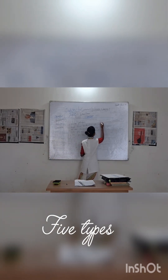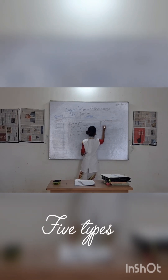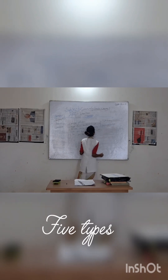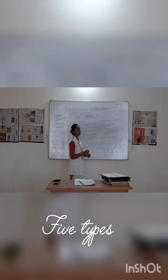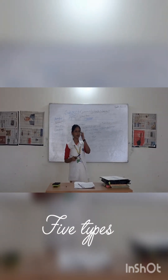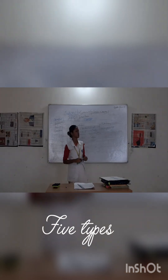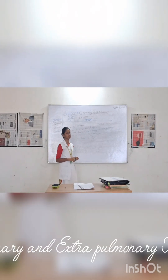Based on anatomical site, it is mainly two types: pulmonary tuberculosis and extra-pulmonary tuberculosis. Pulmonary tuberculosis means when our lungs are affected by Mycobacterium tuberculosis — that is pulmonary tuberculosis.